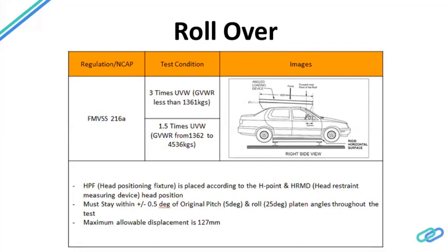For rollover, FMVSS 216 is used. Since you can't literally roll a car over in a testing environment, they replicate it by pressing a plate onto the roof with a certain force. If the vehicle's unladen weight is up to 1,361 kg, three times the unladen weight is applied. For heavier vehicles between 1,362 kg and 4,536 kg — such as large SUVs — only 1.5 times the weight is applied, as the scale factor accounts for the actual rollover dynamics.